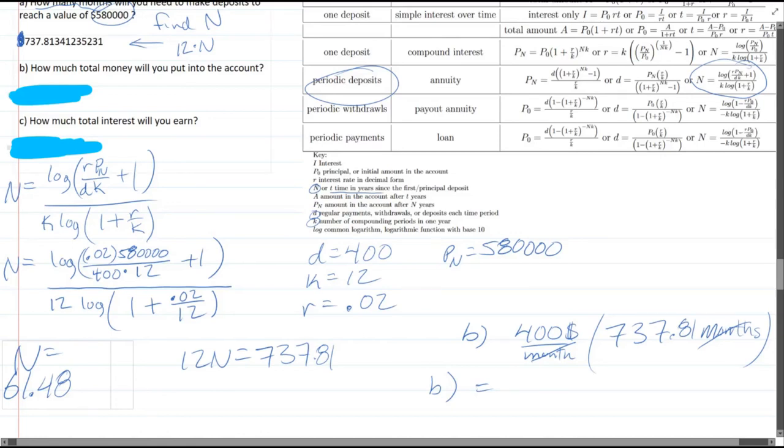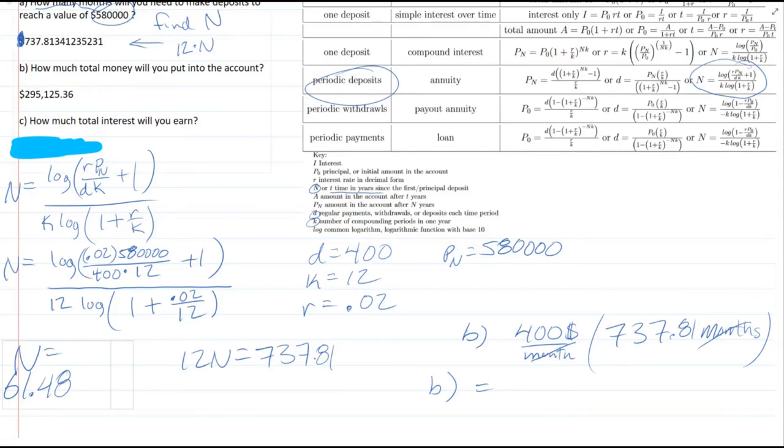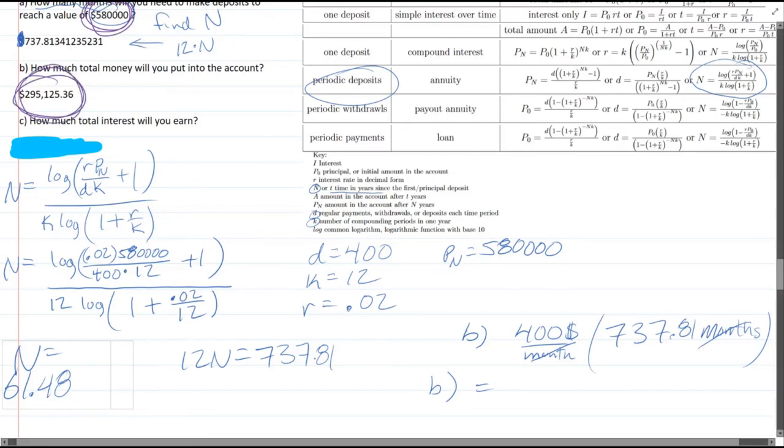How much interest will you earn? Well, once you know how much you put in, the interest is the difference between the account value and how much you put in. So you subtract those two and you get the interest that you earned. It's the amount of money you got that you did not put in, so that comes from all the interest.